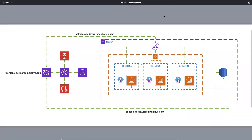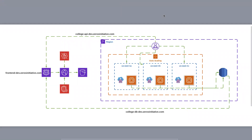Welcome to this session where we start Project One, which is inclined towards microservices deployments and also has an amazing front-end. I'll walk you through all the different components on this architecture diagram. I'll explain each component individually and what we are going to do in Project One, and also give a small hint about what we'll be doing in Projects Two and Three.